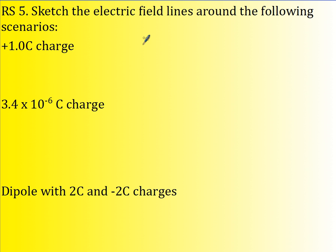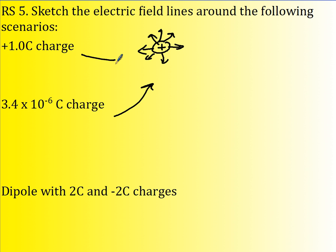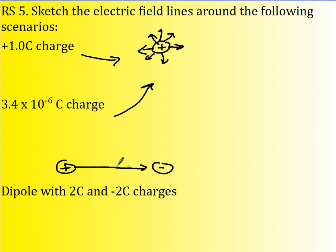Now sketch electric fields around the following. A positive charge: start on positive, end on negative — it's radially outward, make it nice and even. This next one will have the exact same diagram because it's also a positive charge. What about a dipole? Positive and negative: start on positive, end on negative. All dipoles should look like this. On the test I'll ask you for a particular number — if I tell you 10, I do mean 10, I will be counting them.